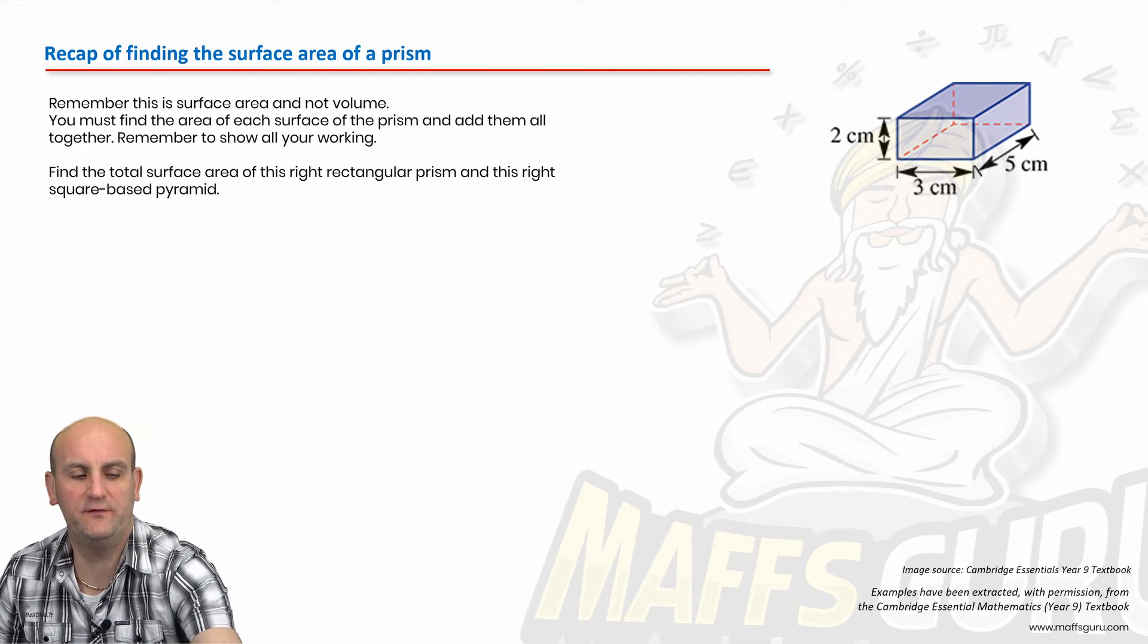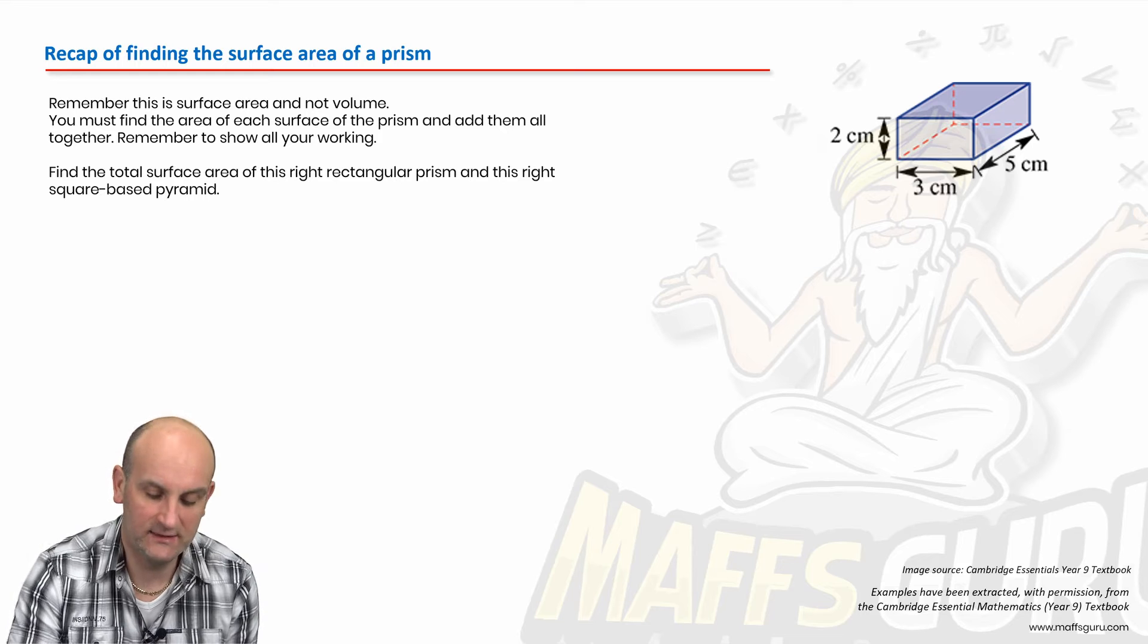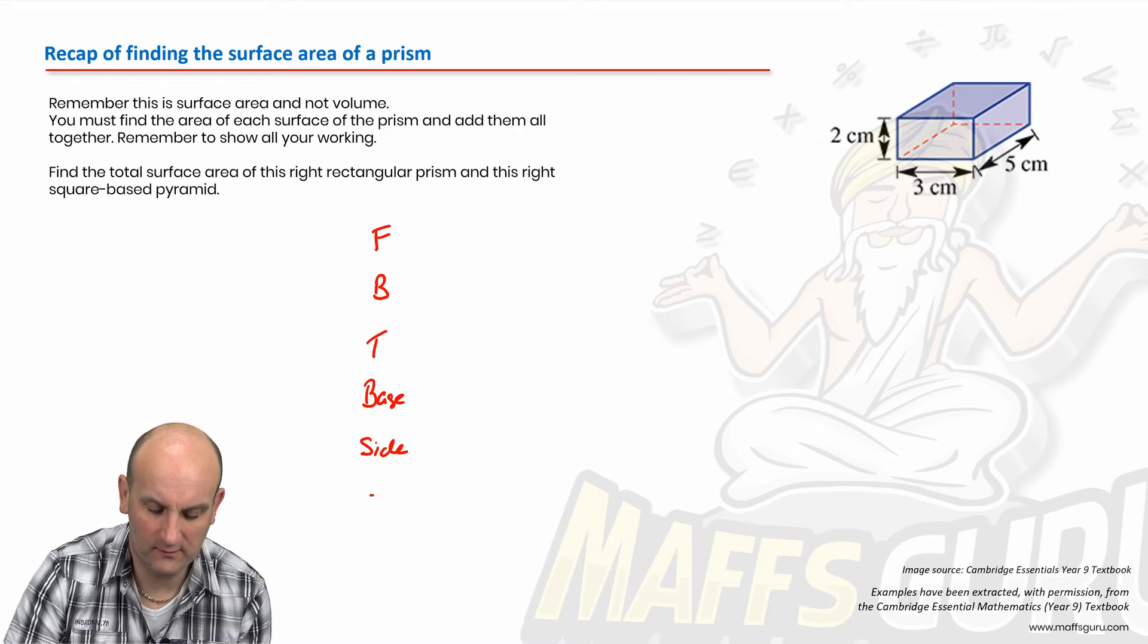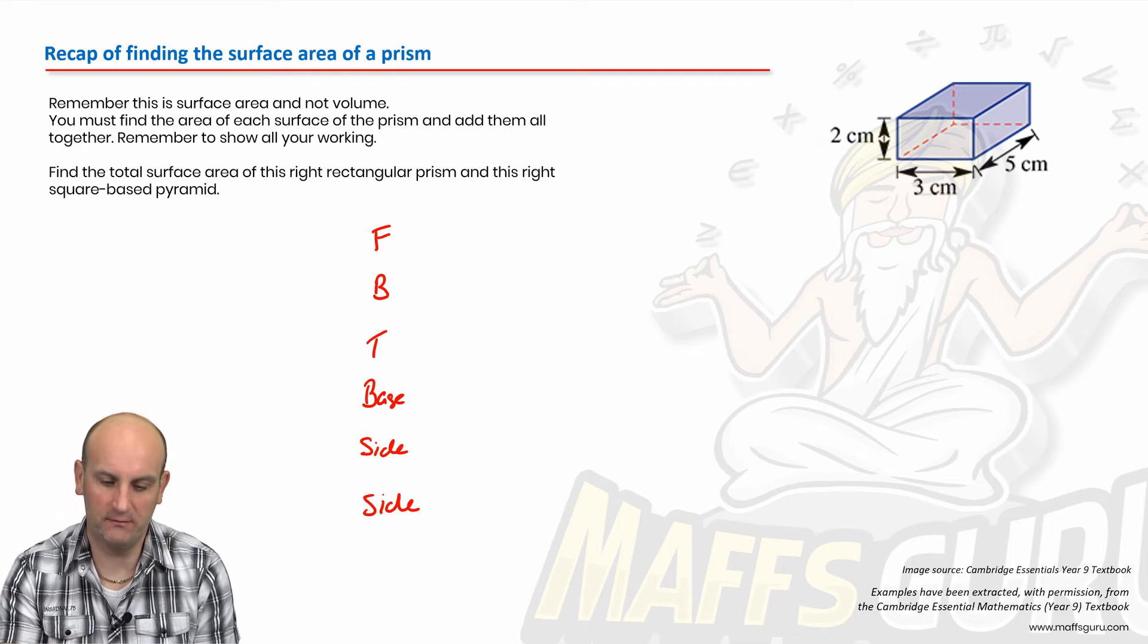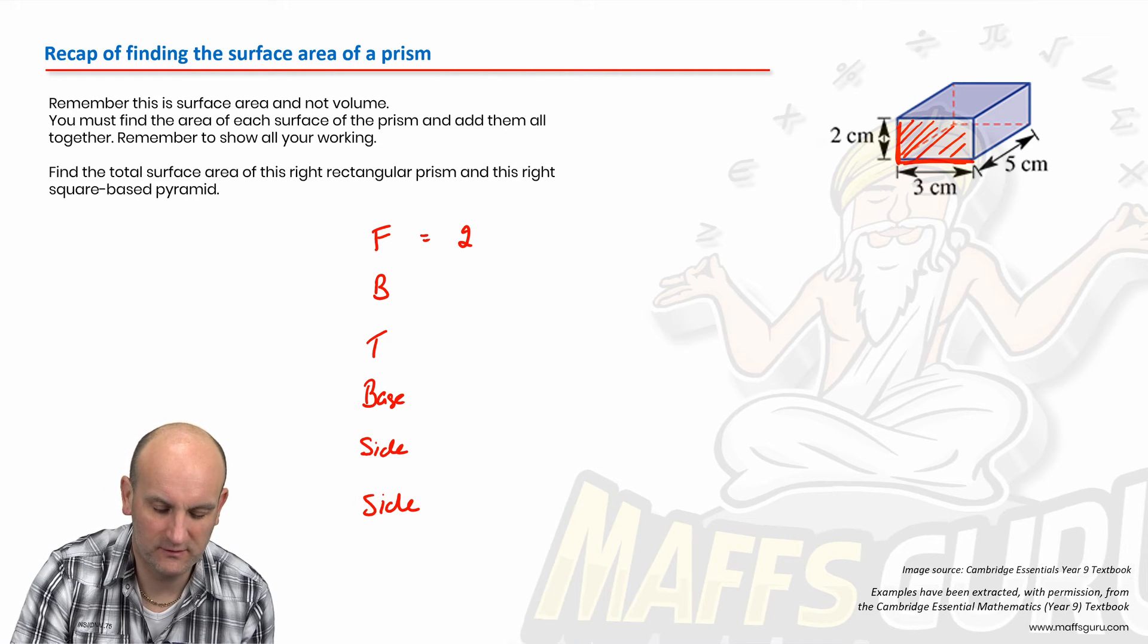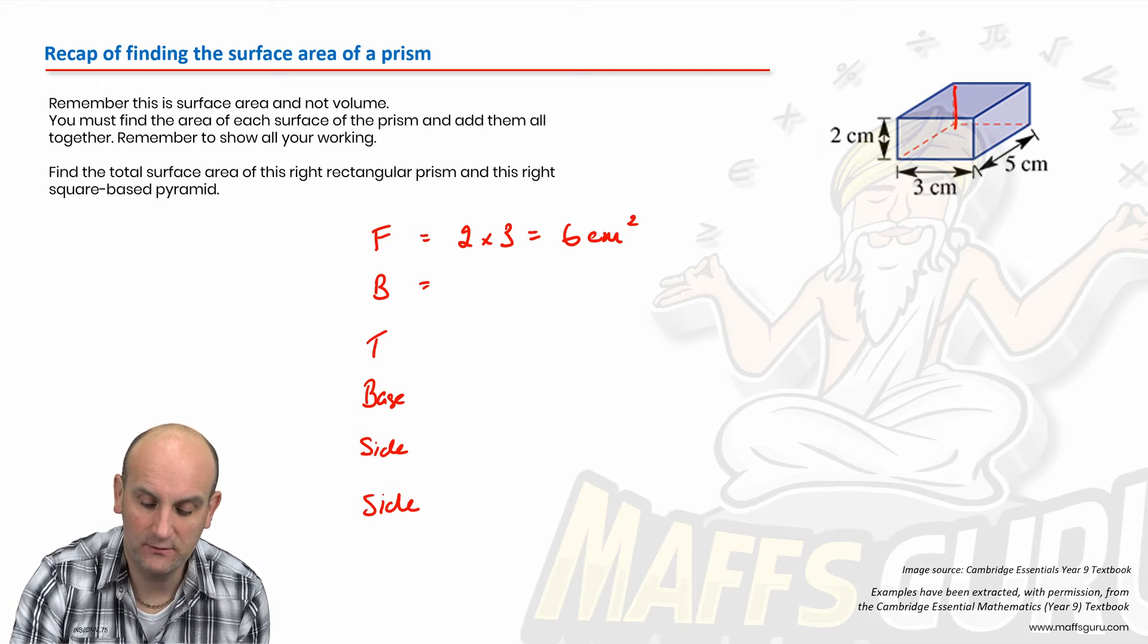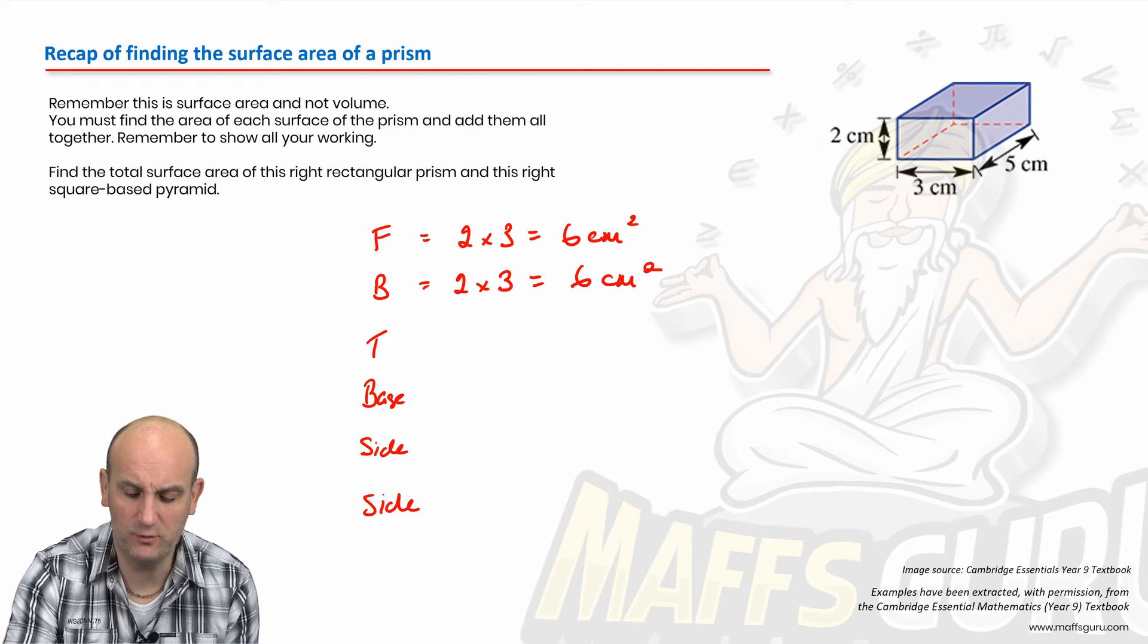Using that, let's just do a recap of the surface area of a prism. We got here a cuboid, and we realized that in this particular instance, that shape will have a front, it will have a back, it will have a top, it will have a base, and it will have a side and another side. I split my shapes up into those six things, add them all together, and I should get my right answer. I'm going to deal with the front first. I know the front has dimensions two by three, so that's two times three, which is six centimeters squared. What about the back? Well, the back is the same because it's a prism, also two by three, which is six centimeters squared.